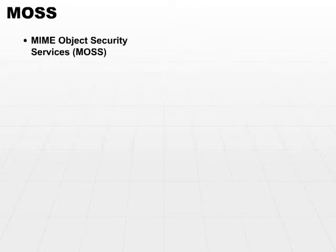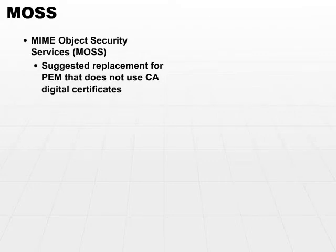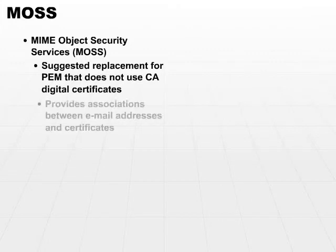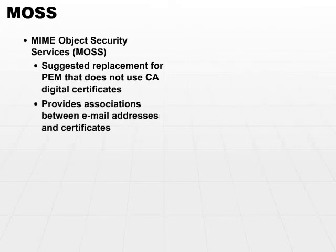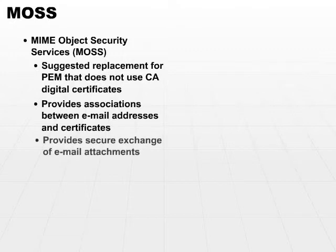Another protocol is MIME Object Security Services, or MOSS. MOSS is a suggested replacement for PEM that does not use the CA digital certificates. It provides associations between email addresses and those certificates, but still provides a secure exchange of email.